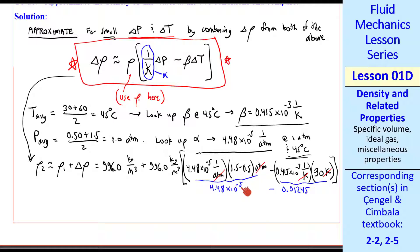When we plug everything in, we get rho 2 as 983.644 kg per meter cubed. We're probably pushing three digits here, but I'll give my final answer to three significant digits.